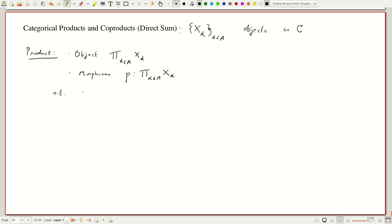Such that we have a universal property. Given an object Y and morphisms to each of these x_i's, morphisms phi_alpha mapping Y to x_alpha.